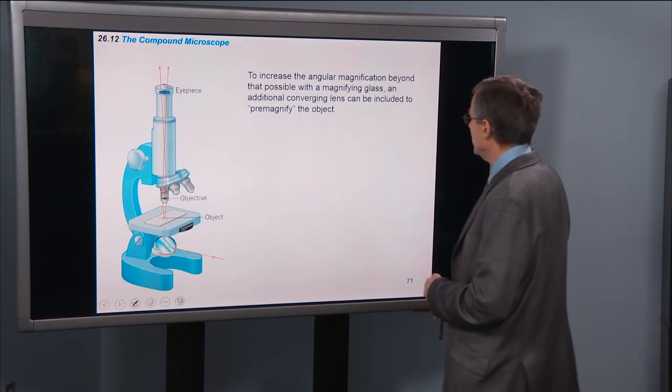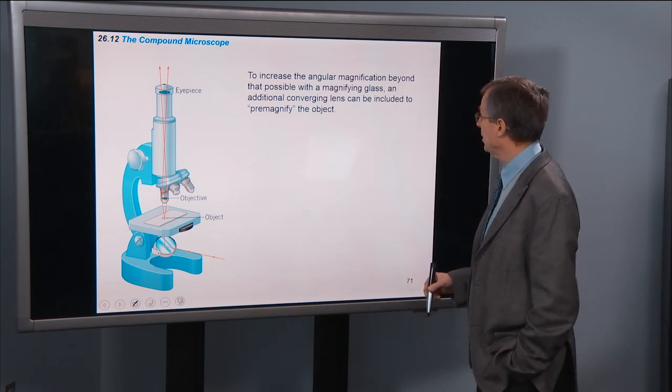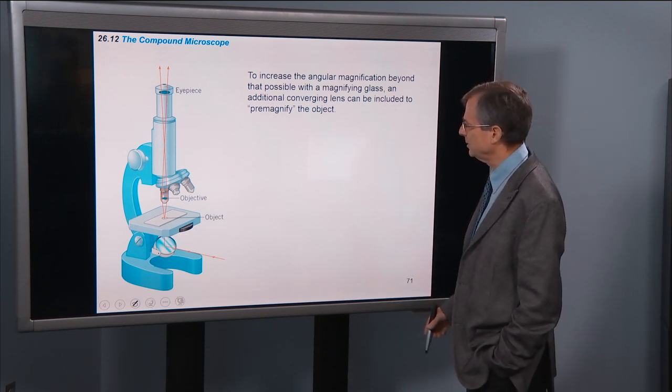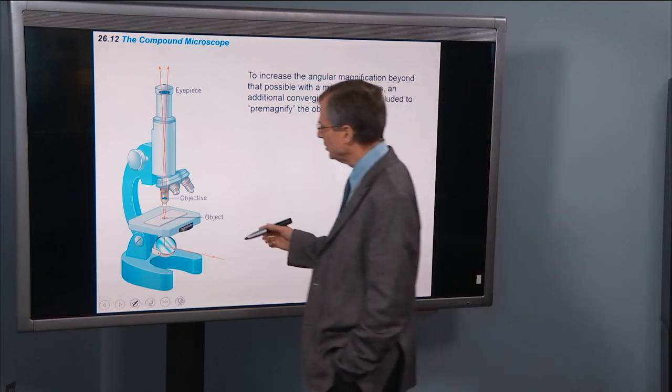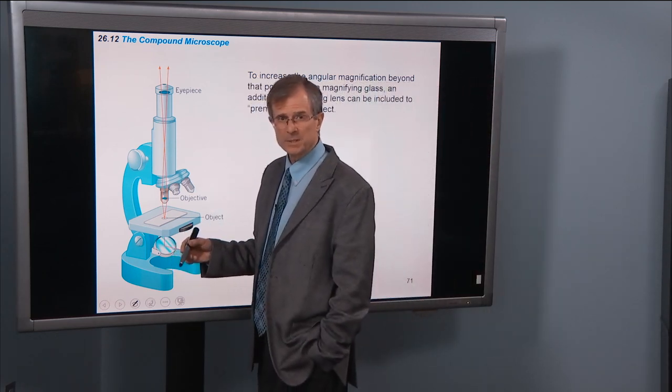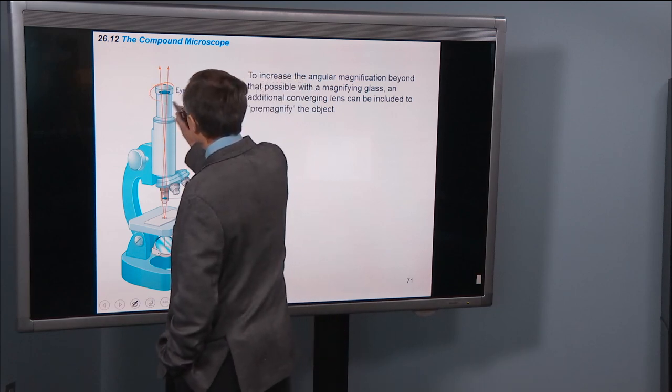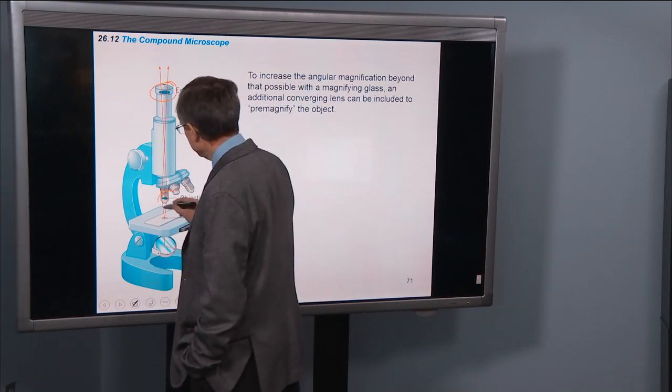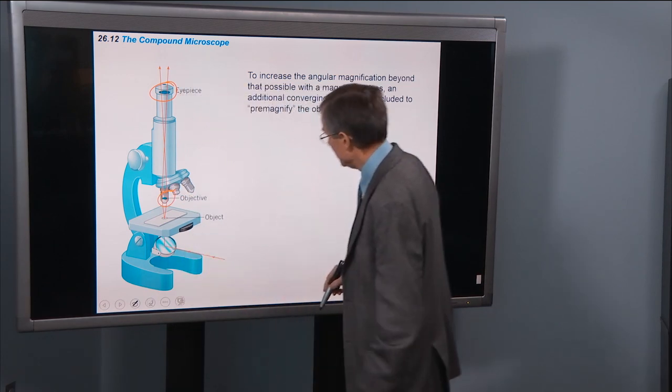And to increase the angular magnification beyond that possible with a magnifying glass, an additional converging lens can be included to pre-magnify. So typically what you see in optical systems, like microscopes, telescopes, etc., you have an eyepiece that is a lens, and then you have an objective lens that's closer to the object.